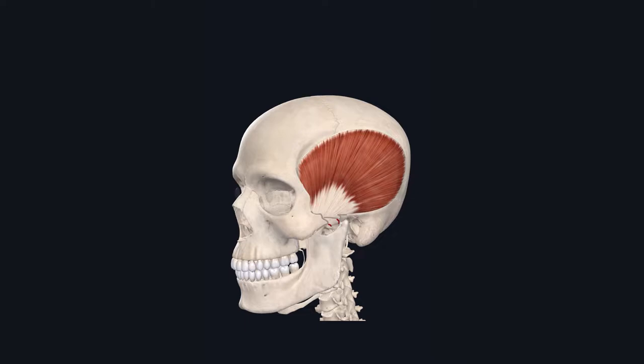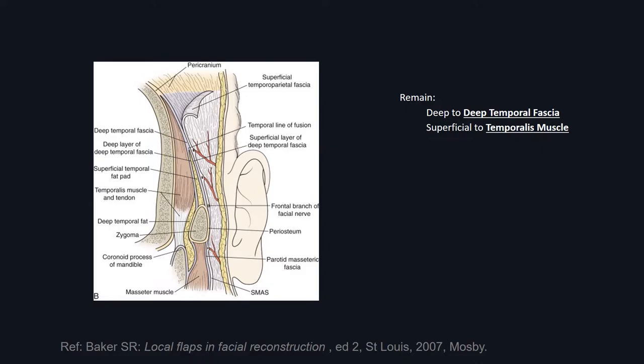Another approach is Gillies's approach, particularly helpful for isolated zygomatic arch fractures without a displaced ZMC fracture. Remember that the fascia directly overlying the temporalis muscle is called the deep temporal fascia. To elevate the depressed zygomatic arch segment, you must approach it from its deep aspect. The plane of dissection must remain deep to the deep temporal fascia while staying superficial to the temporalis muscle to reach the deep aspect of the zygomatic arch and lift it superficially.